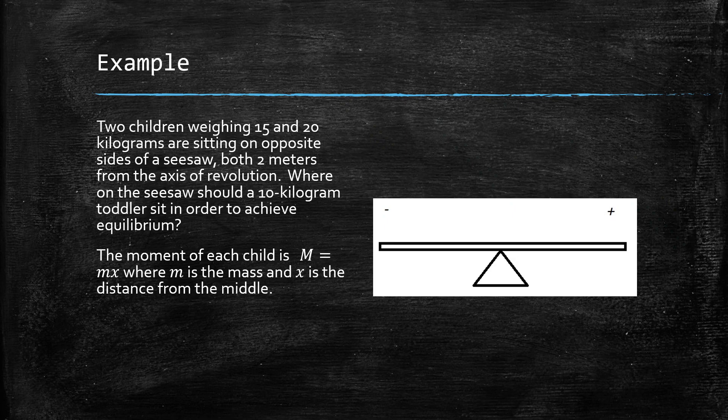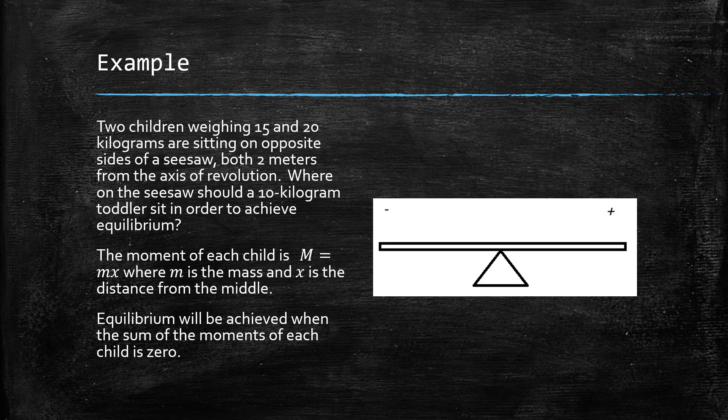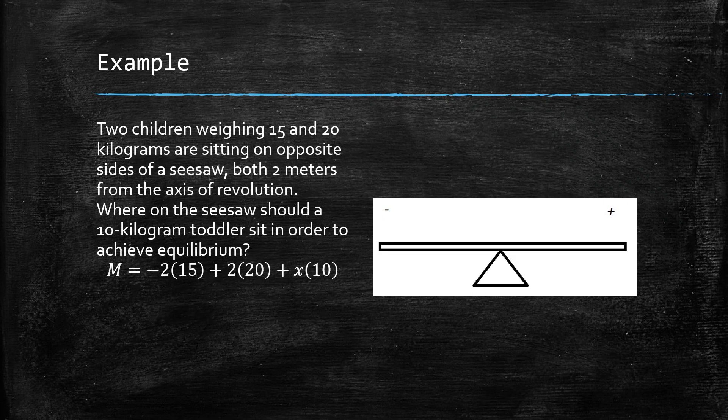The moment of each child is m times x, where m is the mass of the child and x is the distance from the middle. Equilibrium will be achieved when the sum of the moments of each child is equal to zero. Adding up the moments for each child — calling that capital M — that's equal to negative 2 times 15, plus 2 times 20, plus x times 10, because we don't know what x is, so that would be our variable.